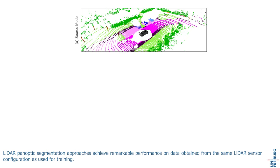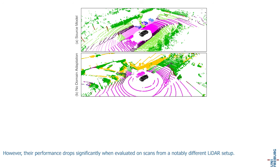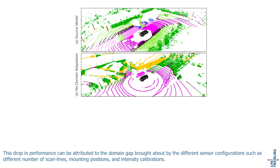LiDAR Panoptic Segmentation approaches achieve remarkable performance on data obtained from the same LiDAR sensor configuration as used for training. However, performance drops significantly when evaluated on scans from a notably different LiDAR setup. This drop can be attributed to the domain gap brought about by different sensor configurations, such as different numbers of scan lines, mounting positions, and intensity calibrations.